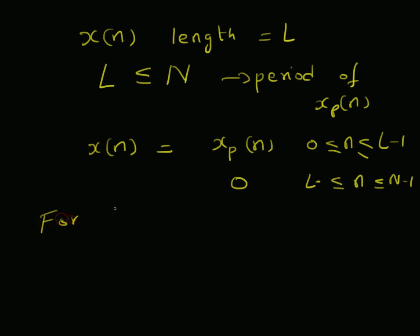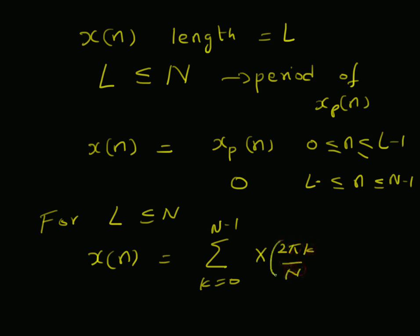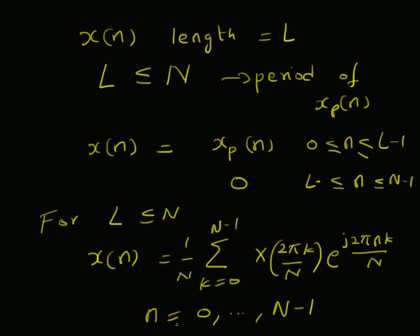Therefore, under the condition L ≤ N, x(n) is equal to the inverse DFT: x(n) = (1/N) Σ from k = 0 to N−1 of X(2πk/N) · e^(j2πnk/N), for values of n from 0 to N−1. Note that x(n) has non-zero values from 0 to L−1, and values from L to N−1 are zero, based on this assumption.